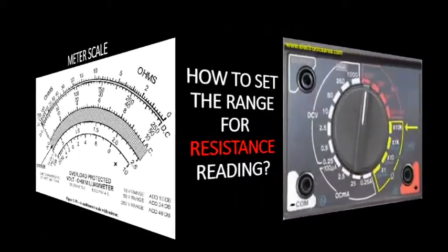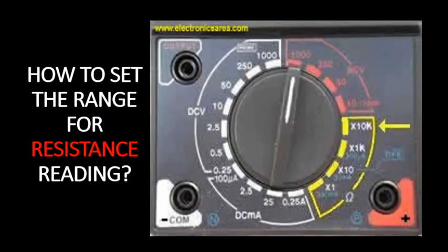How to set the range for resistance reading? The range to be used is times 1, times 10, times 1K, and times 10K. In other multitesters there is times 100 and times 100K. You can set the range depending on the resistance value to be tested. The range must be lower than the value of the resistance to be tested.